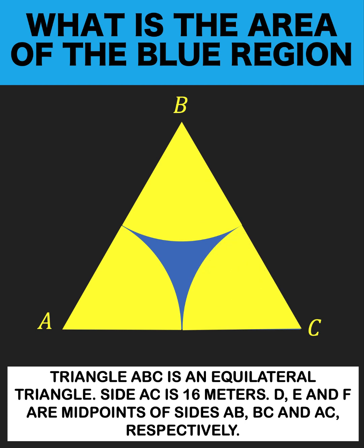Let's say we are given this equilateral triangle ABC with a side of 16 meters. Then we construct these three sectors of a circle in such a way that D, E, and F are midpoints of sides AB, BC, and AC respectively.